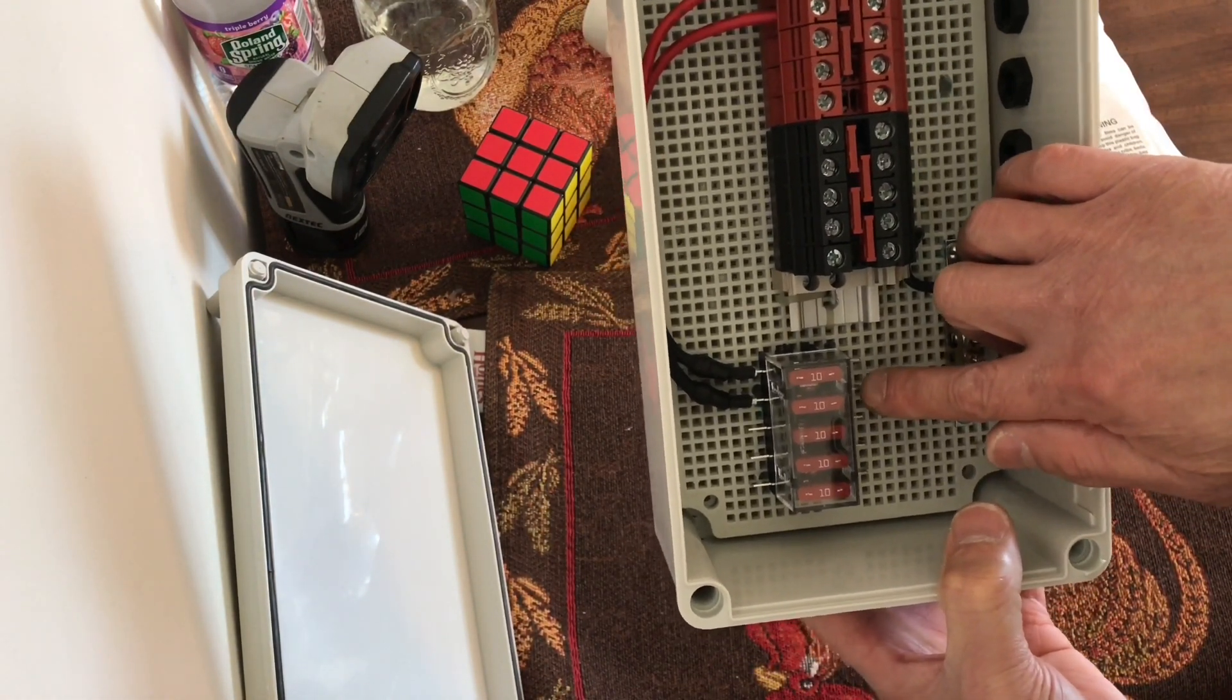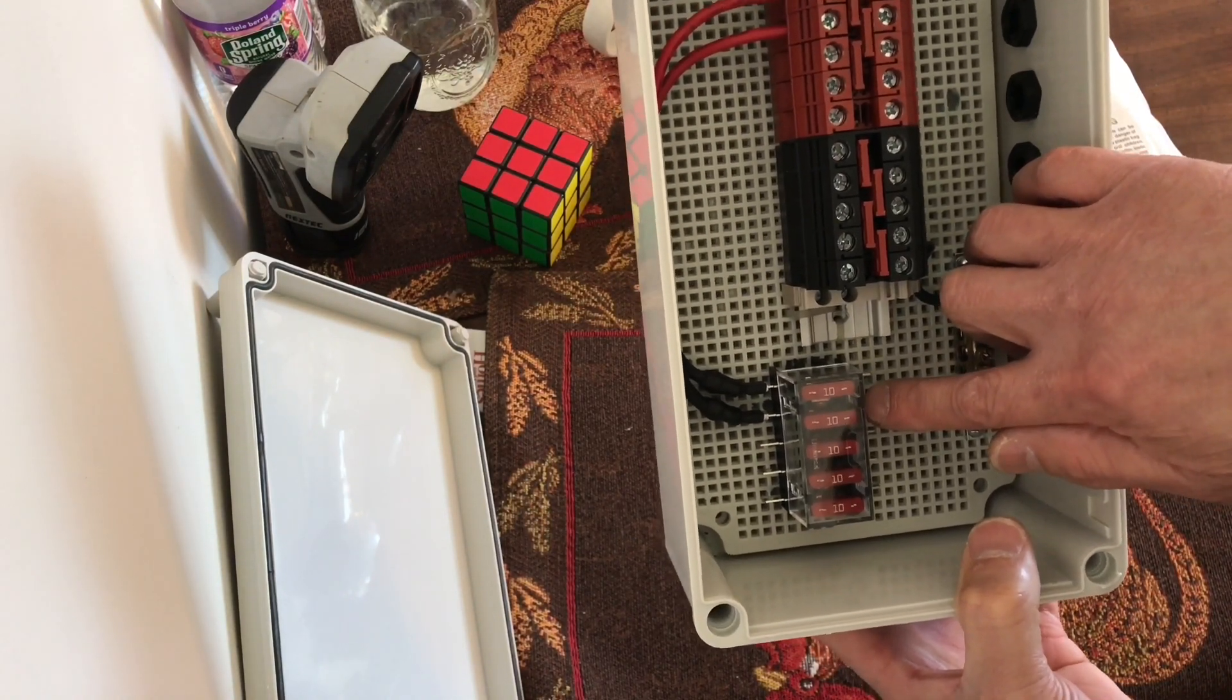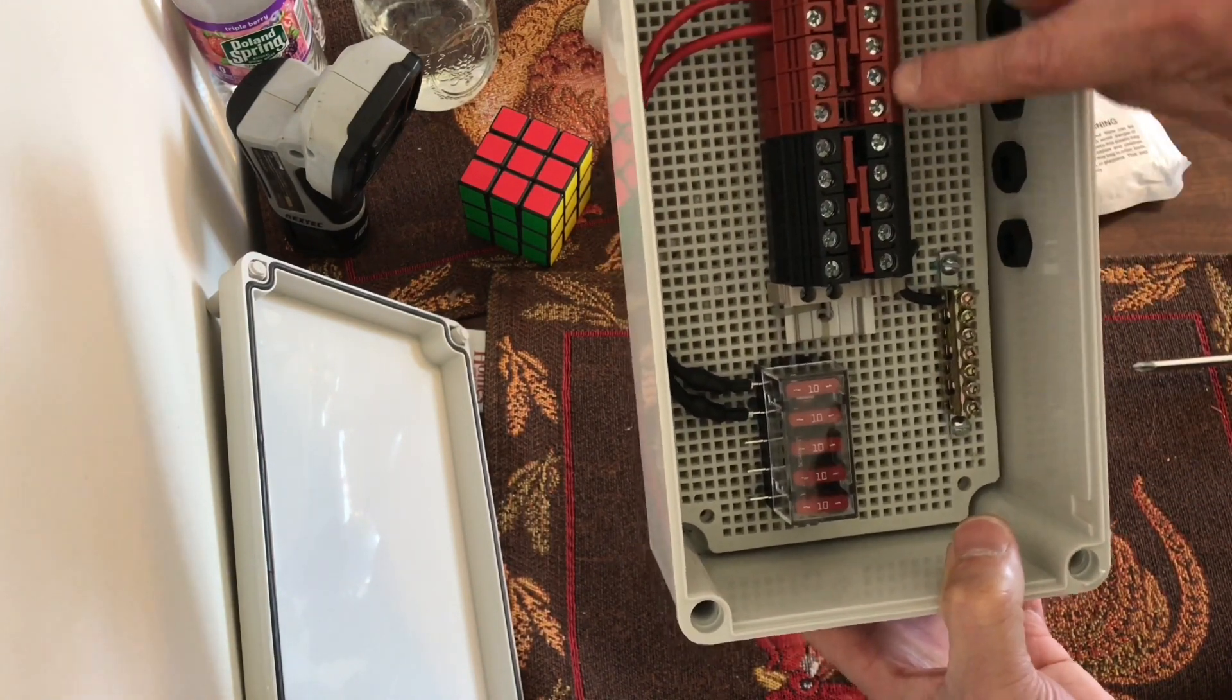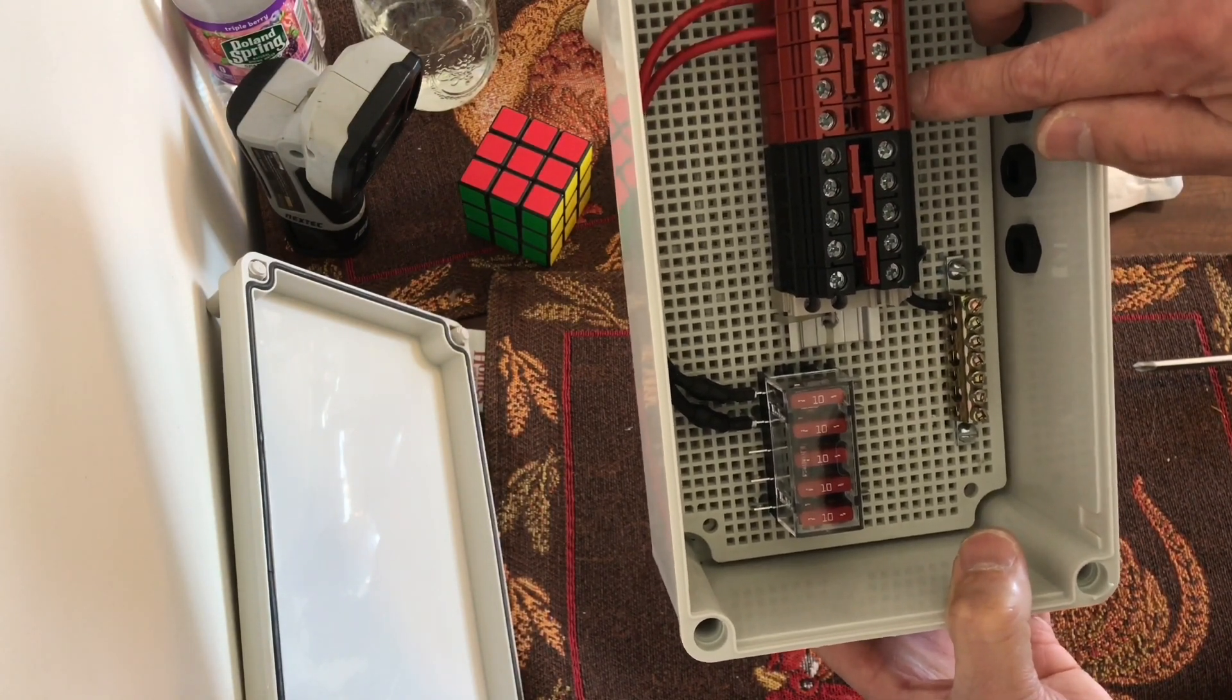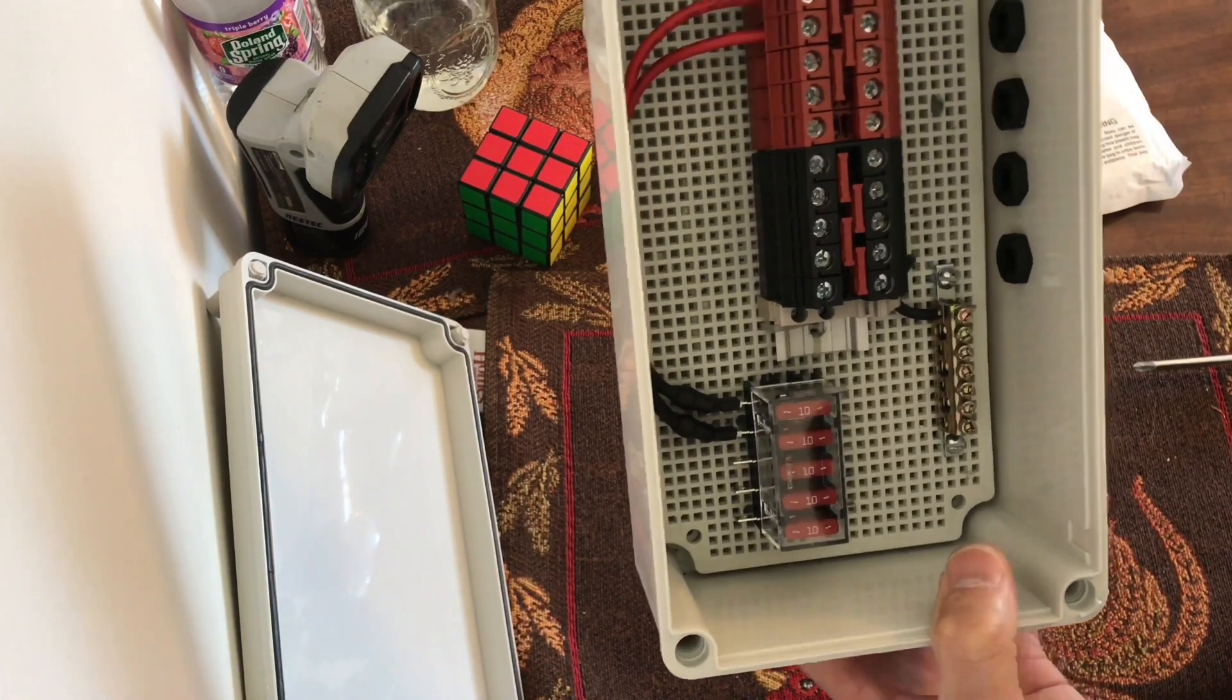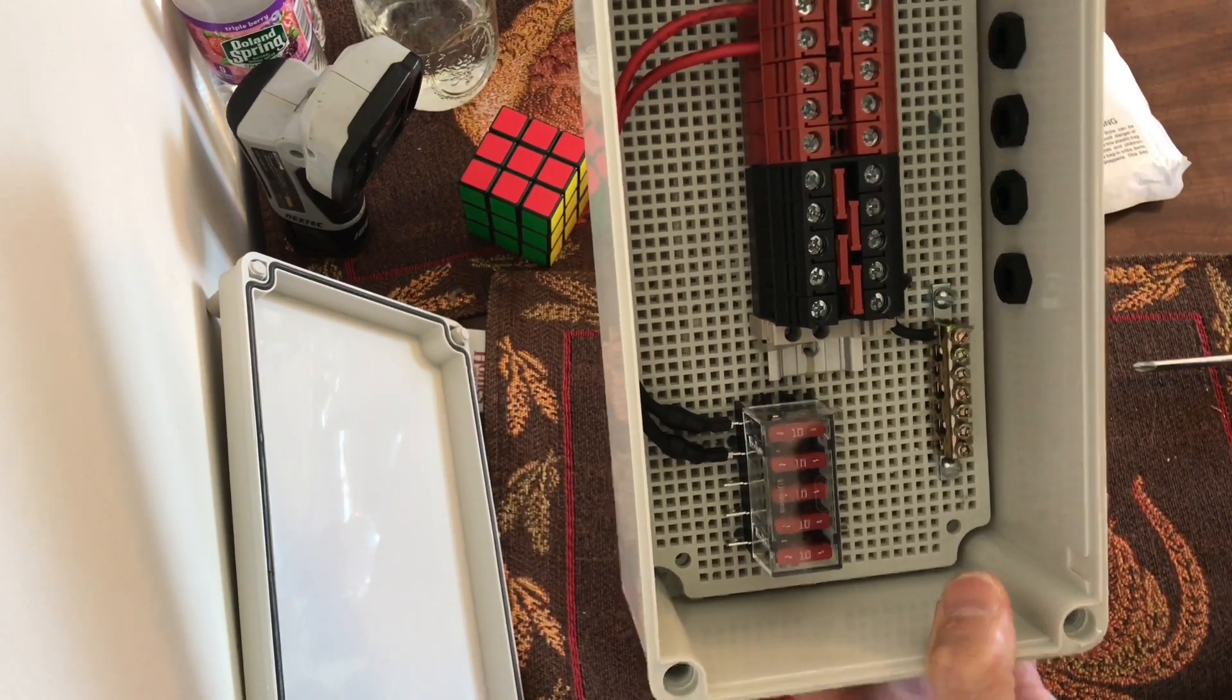From there I'll connect it to the positive, will be connected to this fuse block right here for two of them, and of course right there. Now it's fused, goes right there. And then from here, one cable, I would say probably ten gauge or eight gauge, probably ten, will be going into my inside the travel trailer.